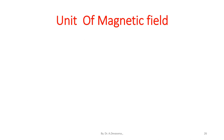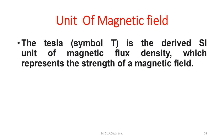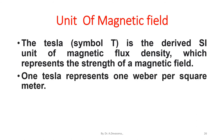The tesla, symbol capital T, is the derived SI unit of magnetic flux density, which represents the strength of a magnetic field. One tesla represents one Weber per square meter.